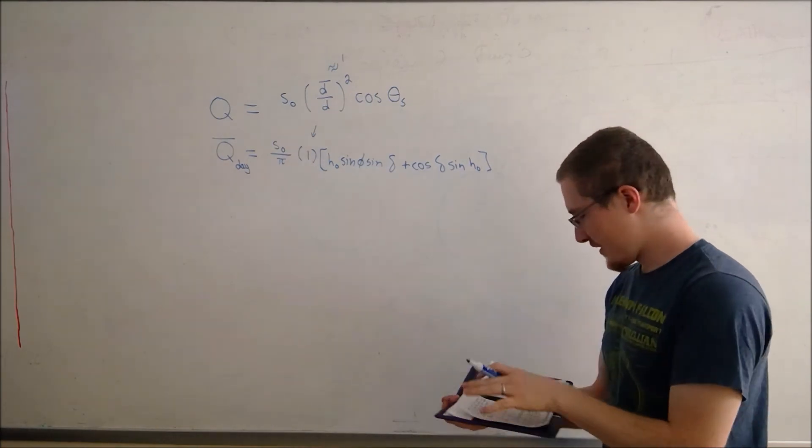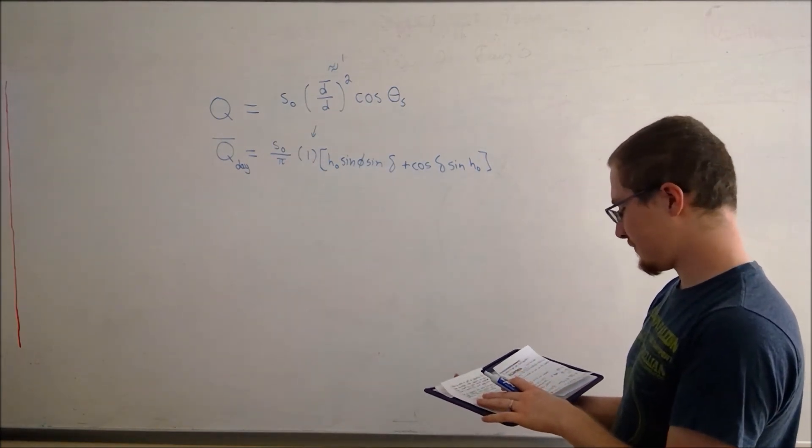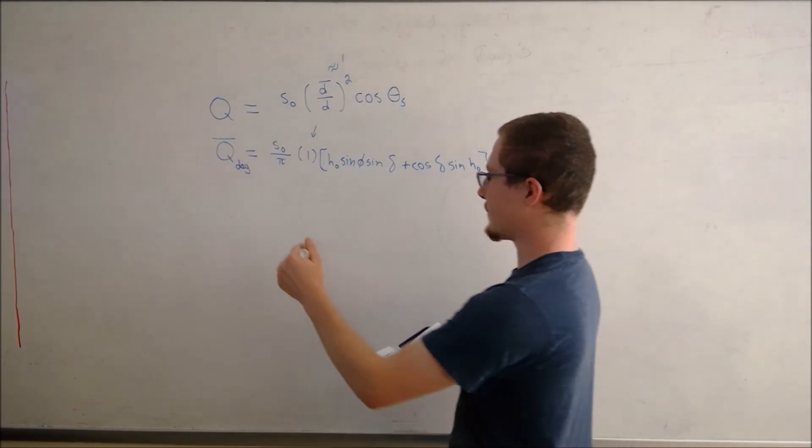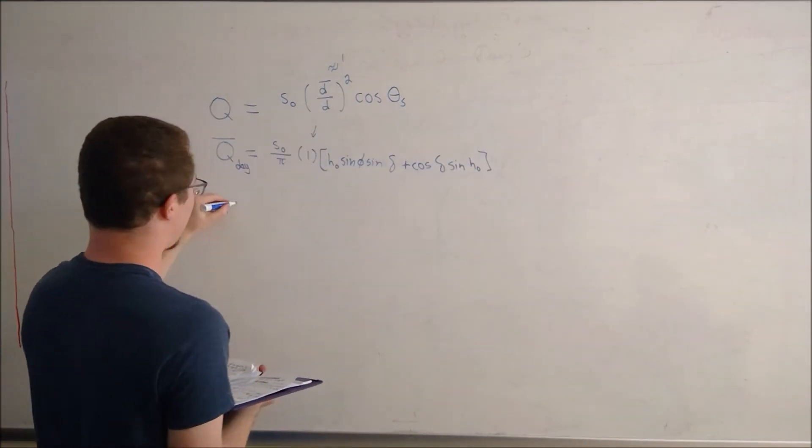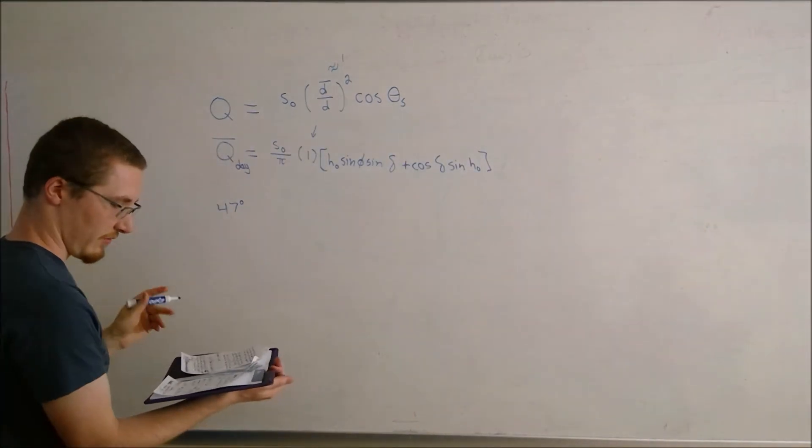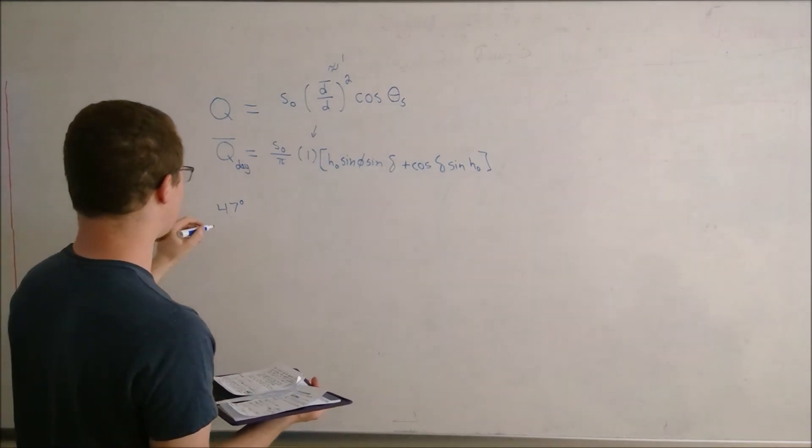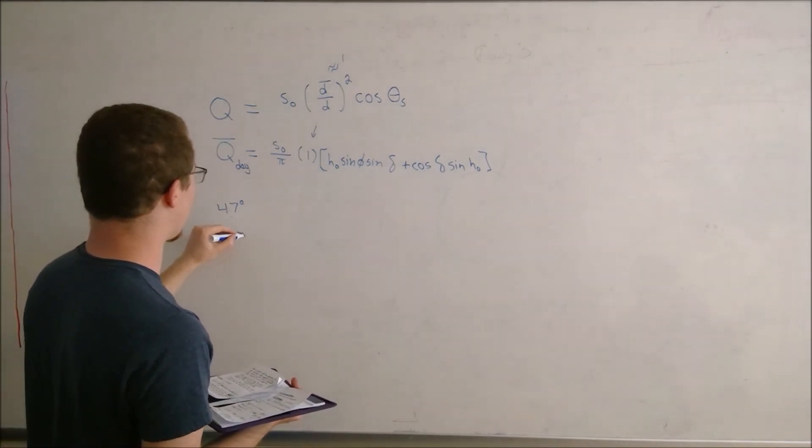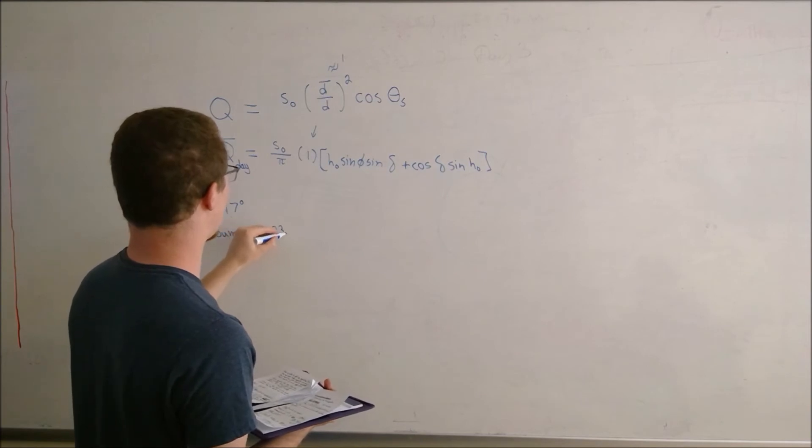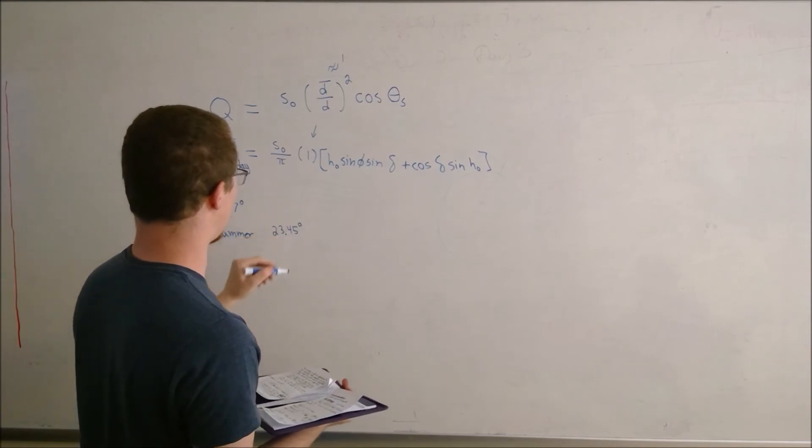Okay, so this is our final equation. So for Seattle, for example, Seattle is at a latitude of 47 degrees north. So we'll leave it as positive 47. And during the summer, the tilt in the northern hemisphere is in our favor, so it is positive, where we get more solar radiation.